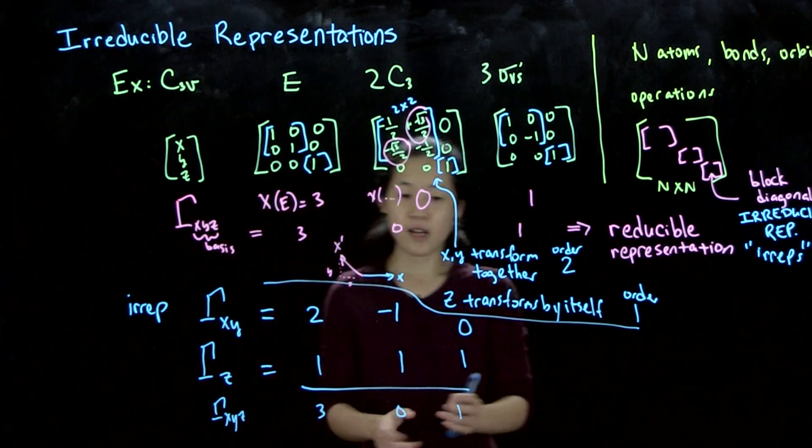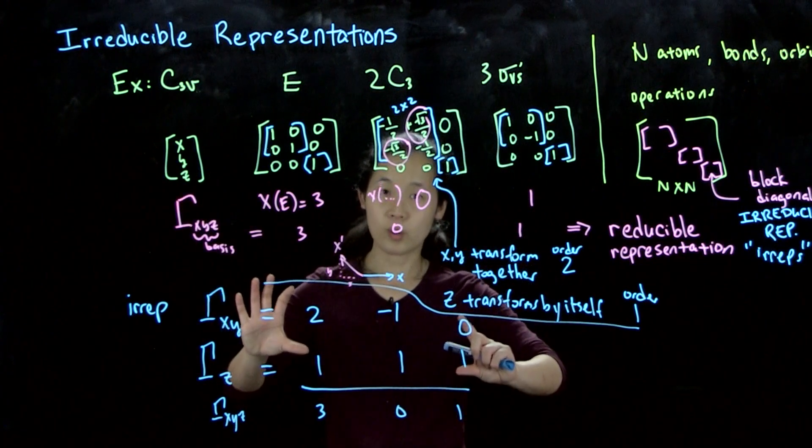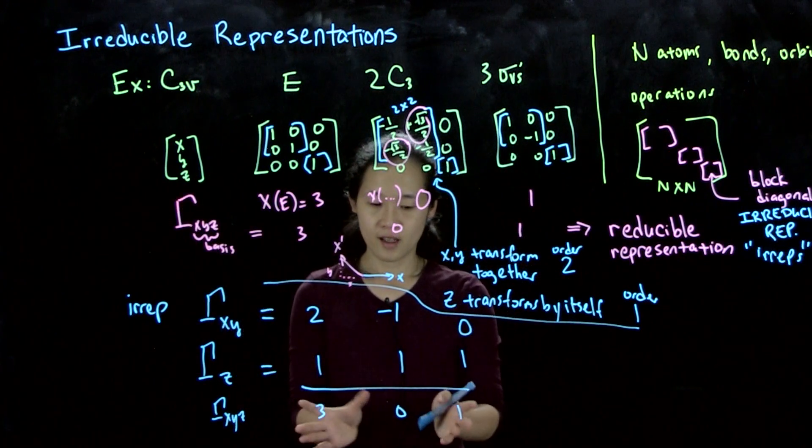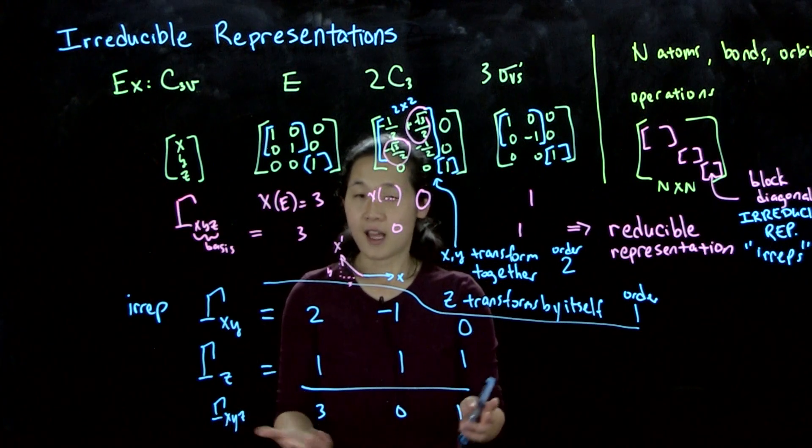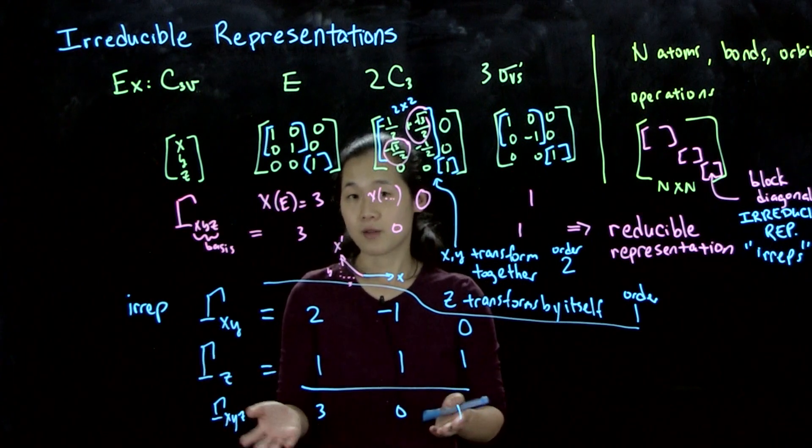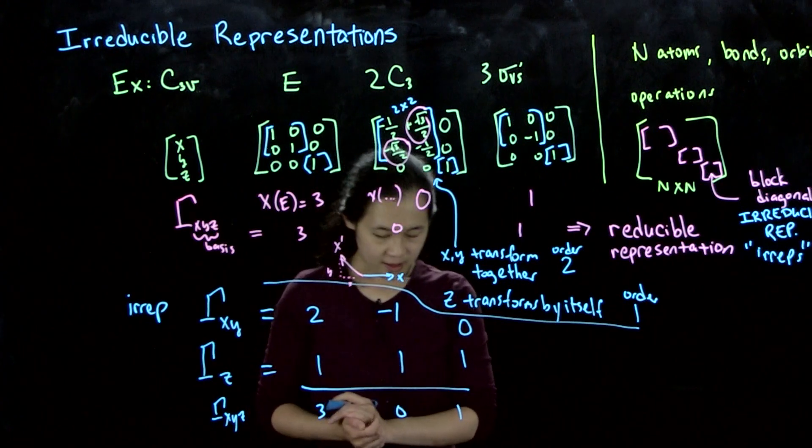In the next video, we'll talk about how we can find any remaining irreps that might be missing from x, y, z, and then we can build a character table out of this.